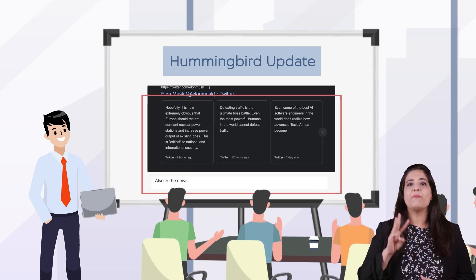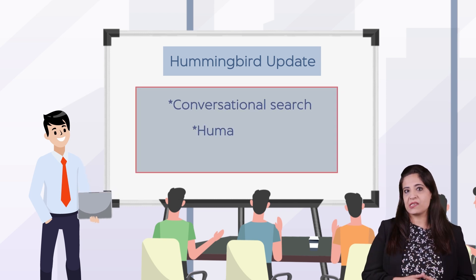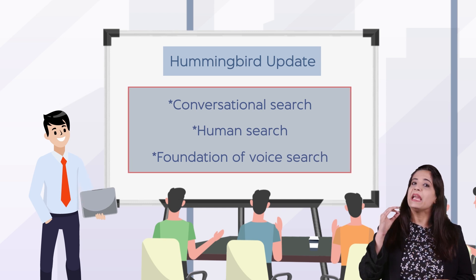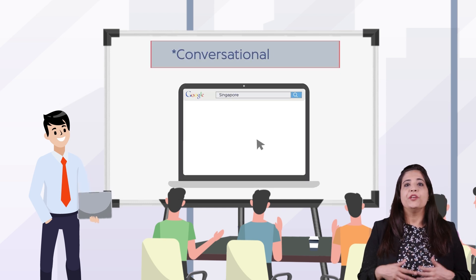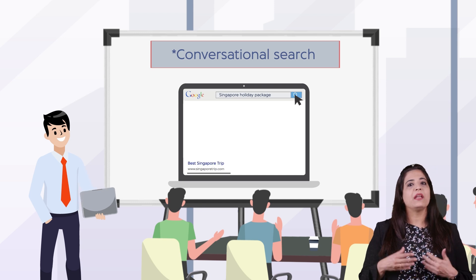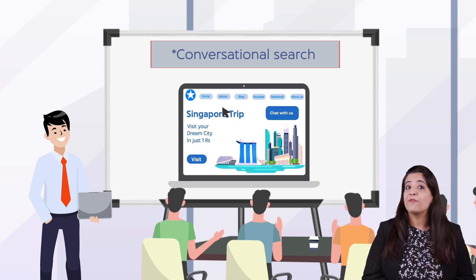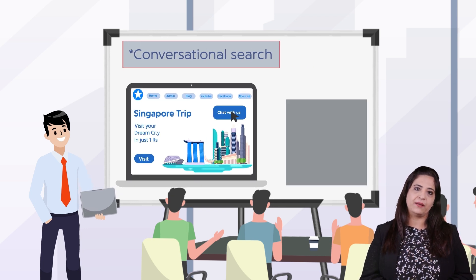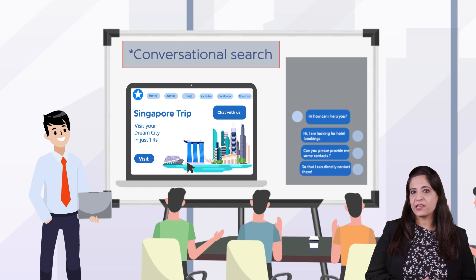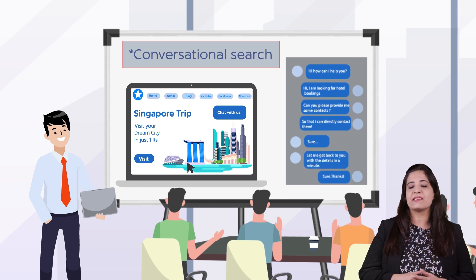Search results got more personalized as a result of this algorithm, which focused on the context of the query. It focuses on three major components: conversational search, human search, and the foundation of voice search. In conversational search, users are able to get specific results based on their queries instead of generic ones, due to the capability of natural language processing. Users may also search with long tail searches because of Hummingbird's ability to analyze intent.